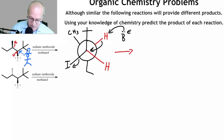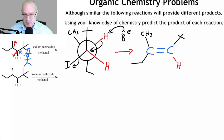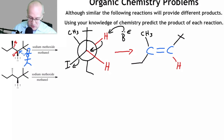So the product: the hydrogen and the ethyl are on the same face — there they are — and the t-butyl and the methyl are on the same side — there you go. That's how you predict the stereochemical outcome using a Newman projection. Now let's look at the second problem.